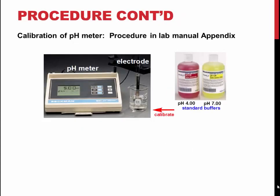For the next step in the experiment, you will need to calibrate a pH meter. The procedure for this is in the appendix of your lab manual. There are also instructional videos available on Moodle showing correct calibration procedures. There are two types of pH meters, so make sure you are using the correct method for your instrument.